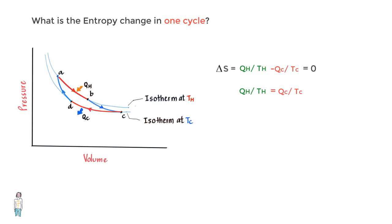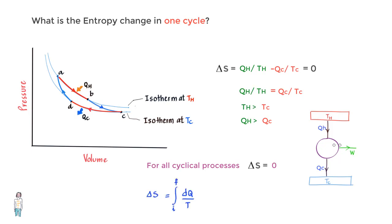Since TH is greater than TC we must conclude that QH is greater than QC or less energy is delivered to the cold reservoir than is extracted from the hot reservoir which is kind of a mathematical proof of what we already know. For all cyclical processes the change in entropy is zero or integral of dQ upon T is equal to zero for all reversible cyclical processes.